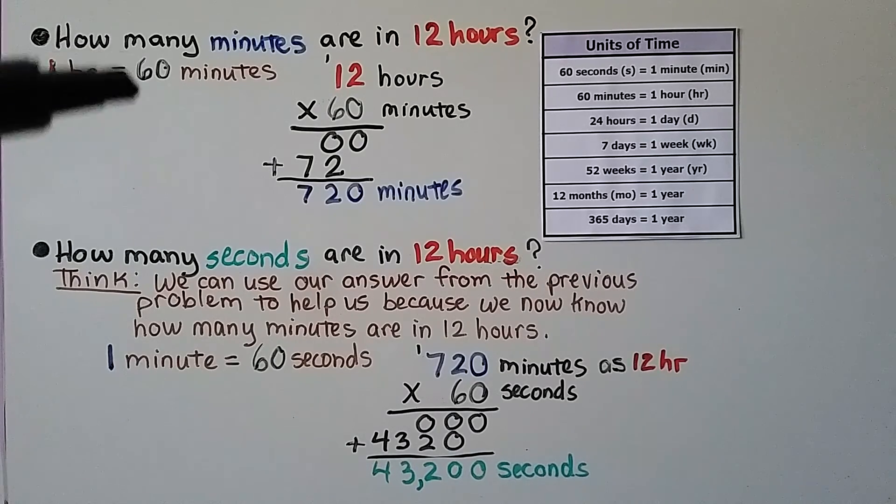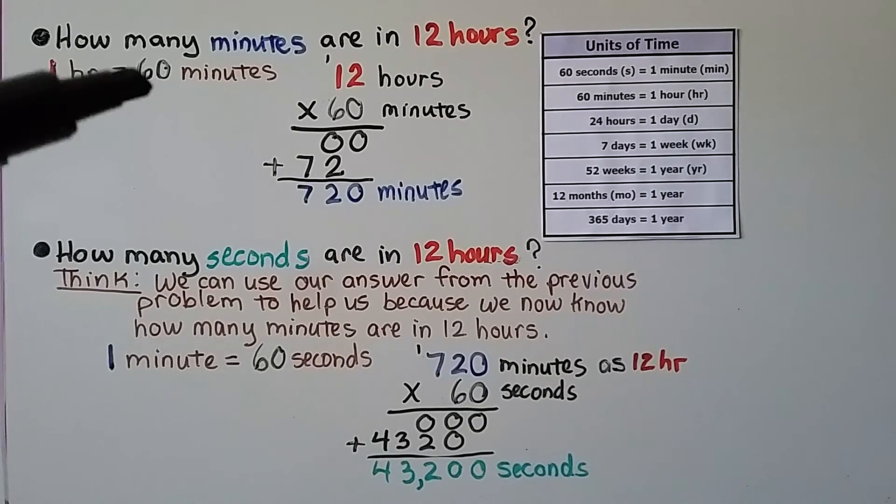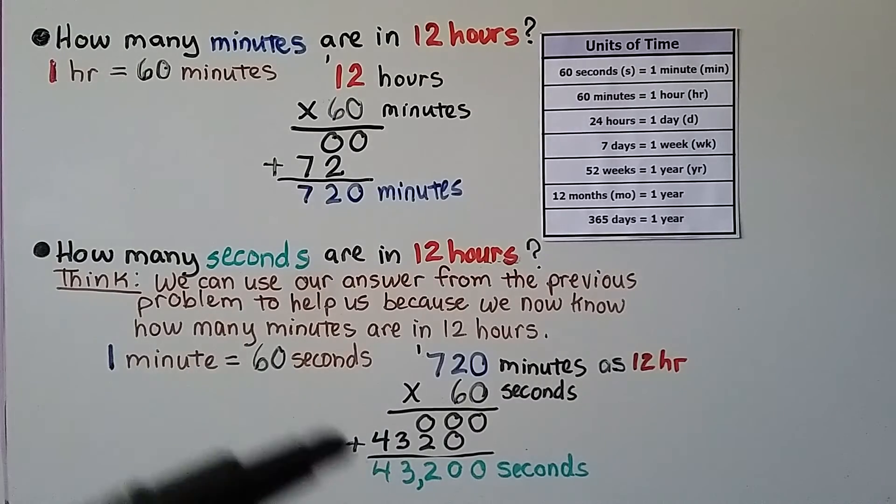We needed to multiply by 60, then by 60 to find the seconds. We needed to multiply by 60 to turn it into minutes, then by 60 again to turn it into seconds because there's 60 seconds in one minute.